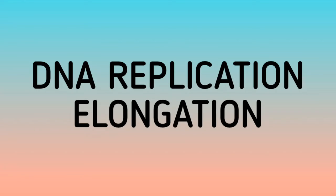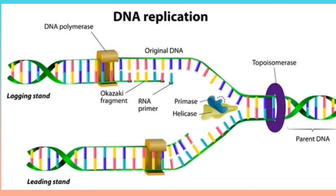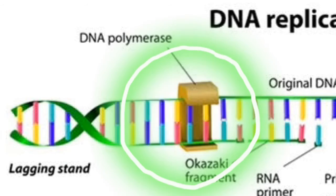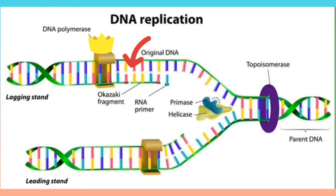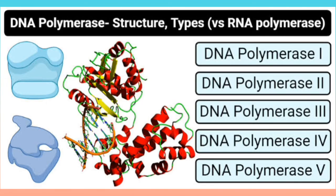DNA replication: Elongation. The second step is the elongation. Enzymes known as DNA polymerases are responsible for creating the new strand by a process called elongation. There are 5 different known types of DNA polymerases in bacteria and human cells. In bacteria, such as E. coli, polymerase 3 is the main replication enzyme, while polymerases 1, 2, 4, and 5 are responsible for error checking and repair.